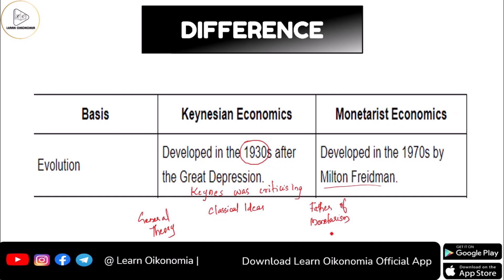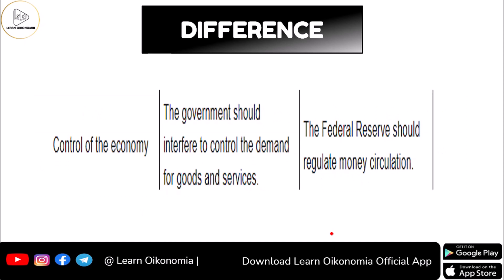Let's see the basic differences between Keynesian economics and monetarist economics regarding control of the economy. Keynesian economics supported one set of ideas and monetarist economics supported another. Keynesian economics said that the role of government should be emphasized — government should intervene in economic activities. The classical school always believed in non-intervention of government, and that if there is any problem in the market, demand and supply would adjust and equilibrium would be restored.